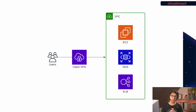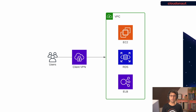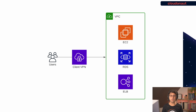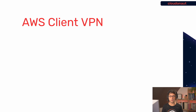AWS Client VPN is a service for client-to-site VPN connections — whenever you want to connect engineers or users to a VPC, this is the service to look at. It allows DevOps engineers to SSH into EC2 instances running in private subnets, directly connect to RDS databases, and so on. It's a fully managed service provided by AWS, so you don't need to run and manage your own VPN machine.